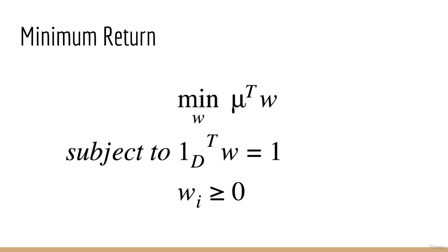From here, it's easy to find the minimum return as well. We simply switch the max to a min, and the constraints remain as they were before.